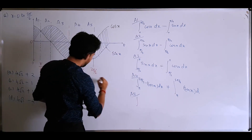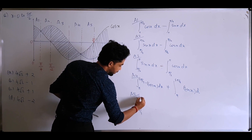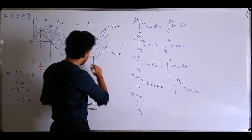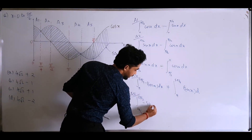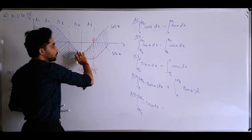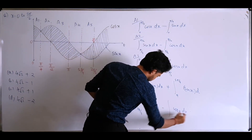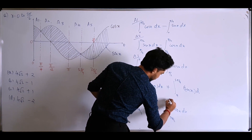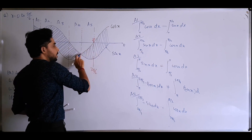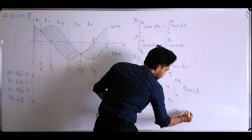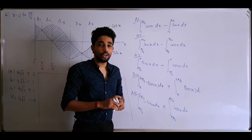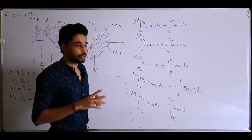For A5, the interval is 5π/4 to 3π/2. The sin x curve is below the x-axis, so I take −sin x dx. I subtract the area under the cos x curve, which is also below the x-axis, giving −cos x. Subtracting a negative becomes positive, so the two negatives combine to give a positive term, resulting in cos x − sin x.